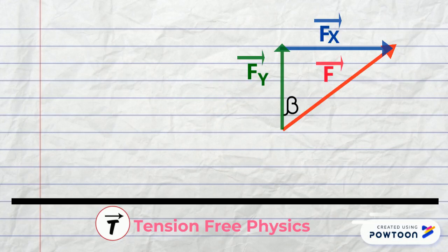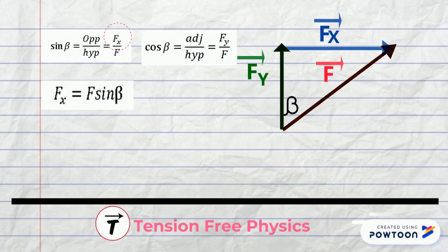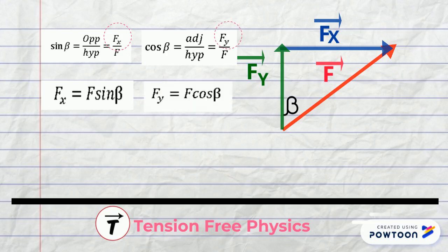In this triangle, sine beta equals opposite over hypotenuse equals fx over f. So fx equals f sine beta. Cosine beta equals adjacent over hypotenuse equals fy over f. So fy equals f cosine beta.